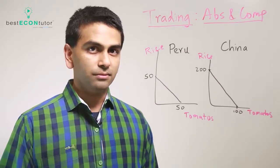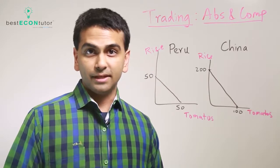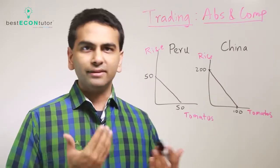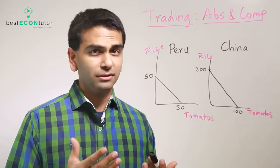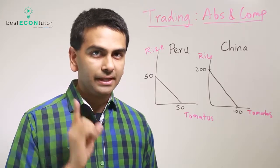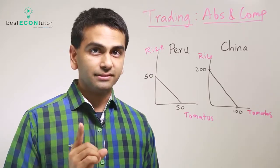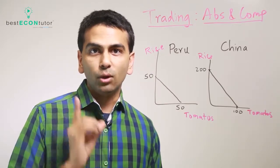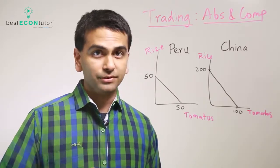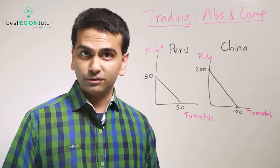Now here's the thing though: what economists look at is comparative advantage. That's really what matters more, because if we wanted to decide trading based on absolute advantage we'd say that China has to make both goods. But really what matters is comparative advantage, and what that is is who has the lower opportunity cost for making that good. That's why we looked at opportunity cost earlier in this video. Now let's put it to use.